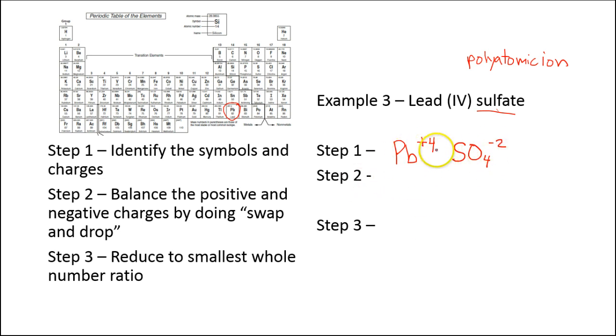And so step 2, we are going to balance positive and negative charges by doing swap and drop. So I won't rewrite it, I'm just going to do this here. I'll do the swap and drop. And so what do we end up with? We get Pb2 and SO4. So we have to put those parentheses, remember, around that whole polyatomic ion, and we put a 4. And we can recognize this polyatomic ion. We have two non-metals. Polyatomic means many atoms. This 8 tells us we have this oxygen here, sulfur and oxygen together.